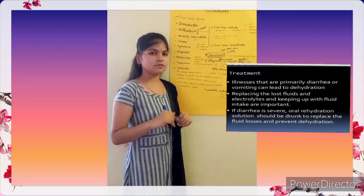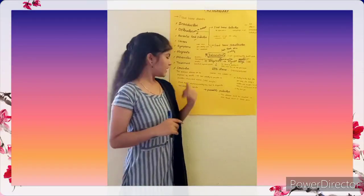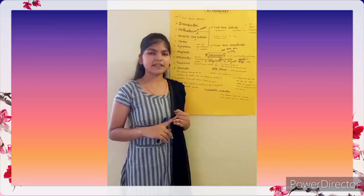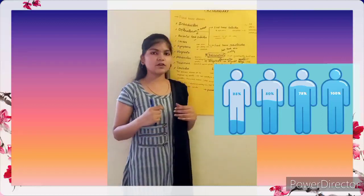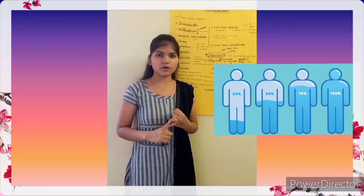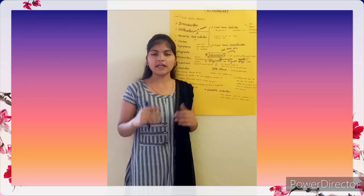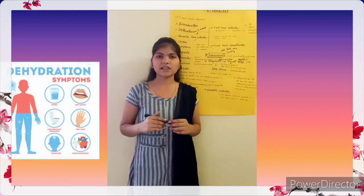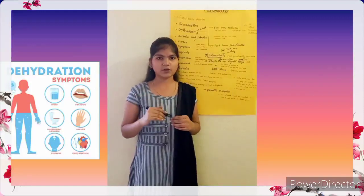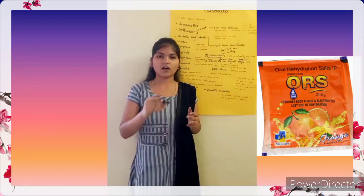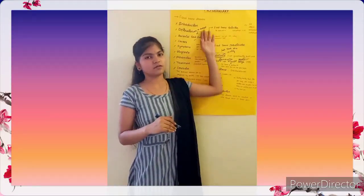If a person is affected with foodborne diseases, the treatment is as follows. Illnesses such as diarrhea and vomiting can lead to dehydration. Therefore, replacing lost electrolytes and fluids is very important. If a person is suffering from severe diarrhea, they should be given an oral rehydration solution to regain all fluids and electrolytes and to prevent dehydration.